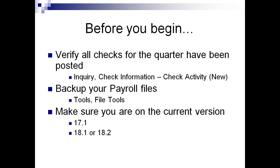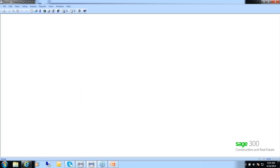The first thing we want to talk about is making sure that you have all of your information posted in payroll — verifying that everything for the quarter is in. You need to make a backup of your payroll files. And you should be keeping track of what current version you're on inside the software. The quick way to verify everything has posted is to go into Inquiry, Check Information, Check Activity. This inquiry is going to be your troubleshooting tool throughout all of payroll.